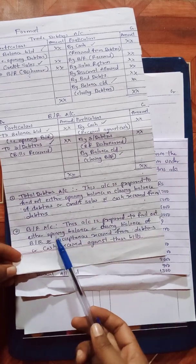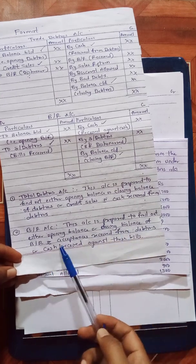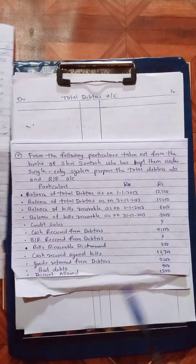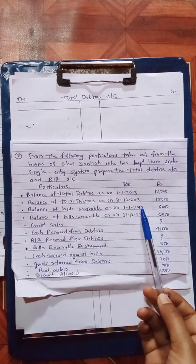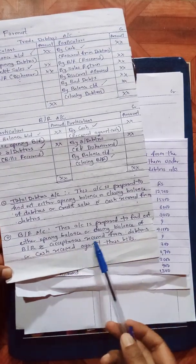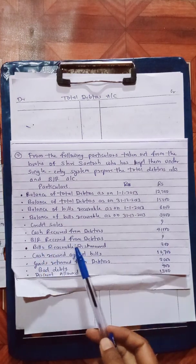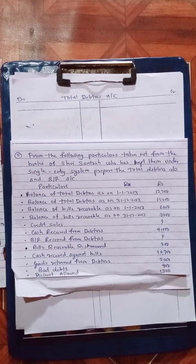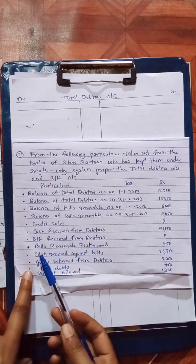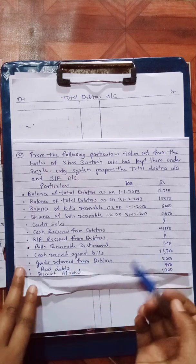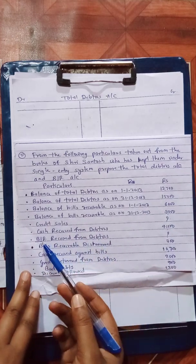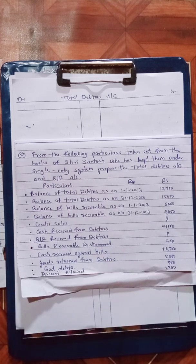For bills receivable account, we need to find out opening balance or closing balance. The debit side includes acceptance received from debtors. Cash received against bills is on the credit side. Opening bills receivable and closing bills receivable are given. Bills receivable received from debtors is the balancing figure to find out. Bills receivable are records from the debtors — transactionally this records both sides.